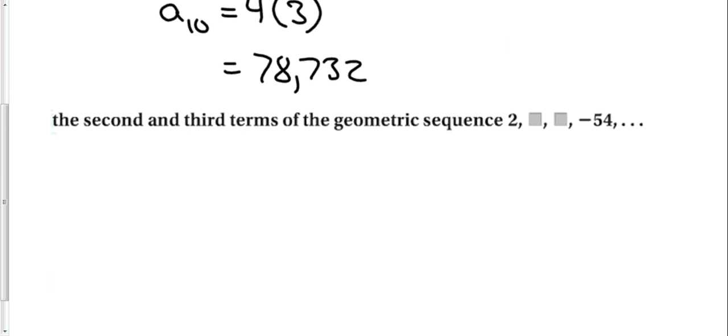So, to find the second and the third term, this is the same problem that we have with the arithmetic sequences. We can try to guess, we can try to figure it out, or we can realize that this is the fourth term. So, a sub 4 has to equal the first term times my common ratio to the third power, to the n minus 1 power. Now we just plug it in. So, this is negative 54 equals 2 r cubed.